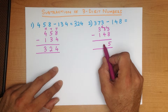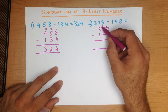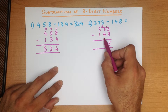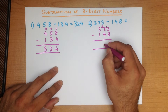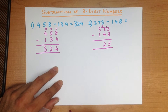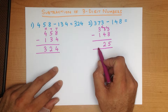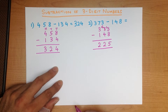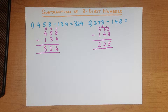We now do the tens column. We're not going to minus from 7 because the 7 has become a 6. It is now 6 minus 4, which is 2. And lastly, the hundreds column — what is 3 minus 1? That's a nice easy one: 2. And we have our answer: 225.